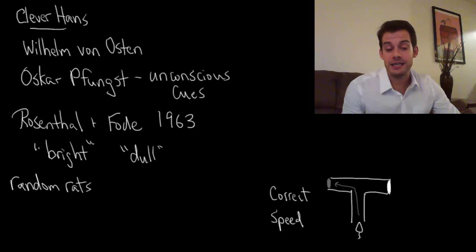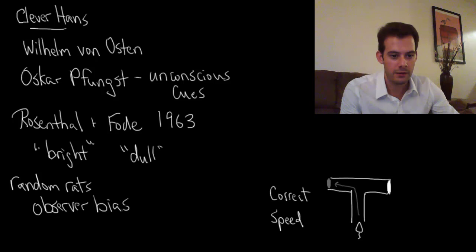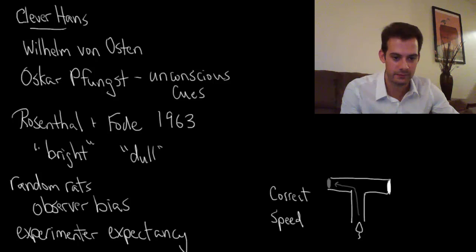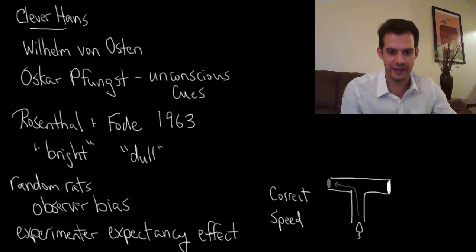Well, Rosenthal and Fode said that this showed there was observer bias. It was the students that were causing the difference, not the rats. So we call this observer bias or if you prefer alliteration you can call this the experimenter expectancy effect. And so this refers to the idea that the students had expectations. They thought that the rats were either going to do well or they thought the rats were going to do poorly. And this expectation ended up causing the result that they thought they were going to have. Now how did this happen? Is it that the rat's self-esteem was being affected because their handlers thought that they were smart or dumb? Well, probably not.